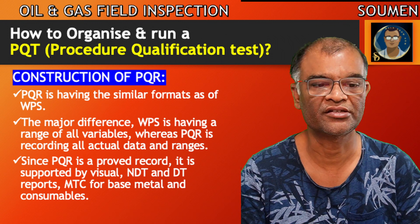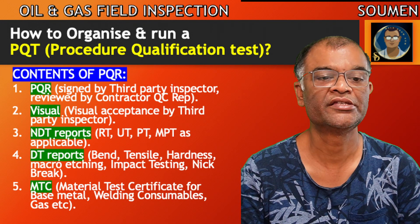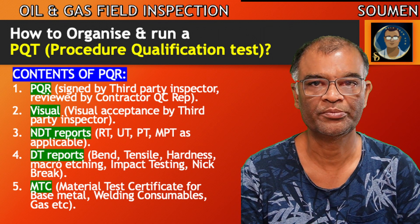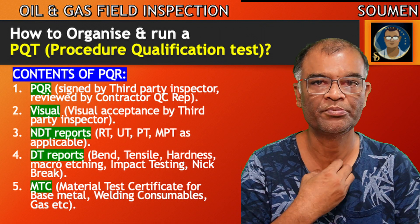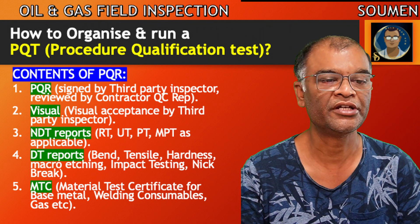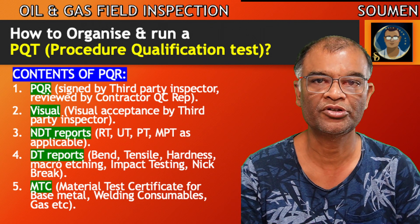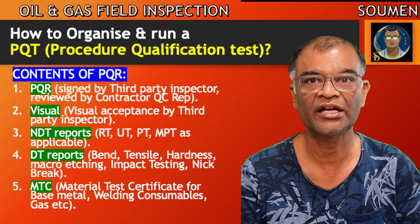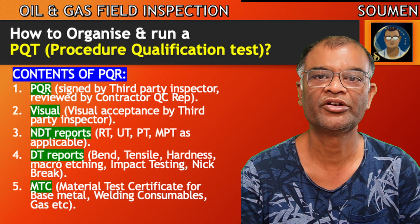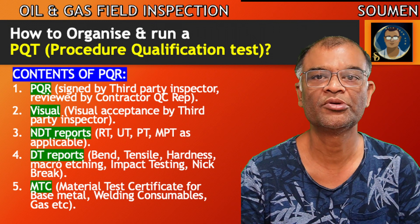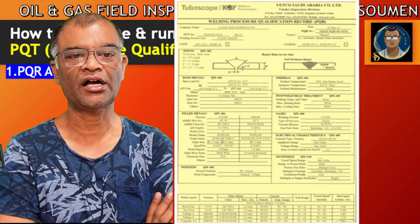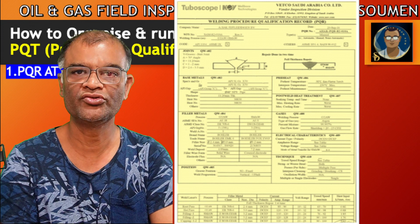We also need to attach the material test certificate for gases. The PQR is generally signed by a third-party inspector and reviewed by the contractor's quality representative. Attached documents include visual acceptance reports, NDT reports (RT, UT, PT, MPT as applicable), destructive test reports (bend, tensile, hardness, impact, macro etching, nick break, etc.), and material test certificates for welding consumables, base metal, filler metal, and gas.